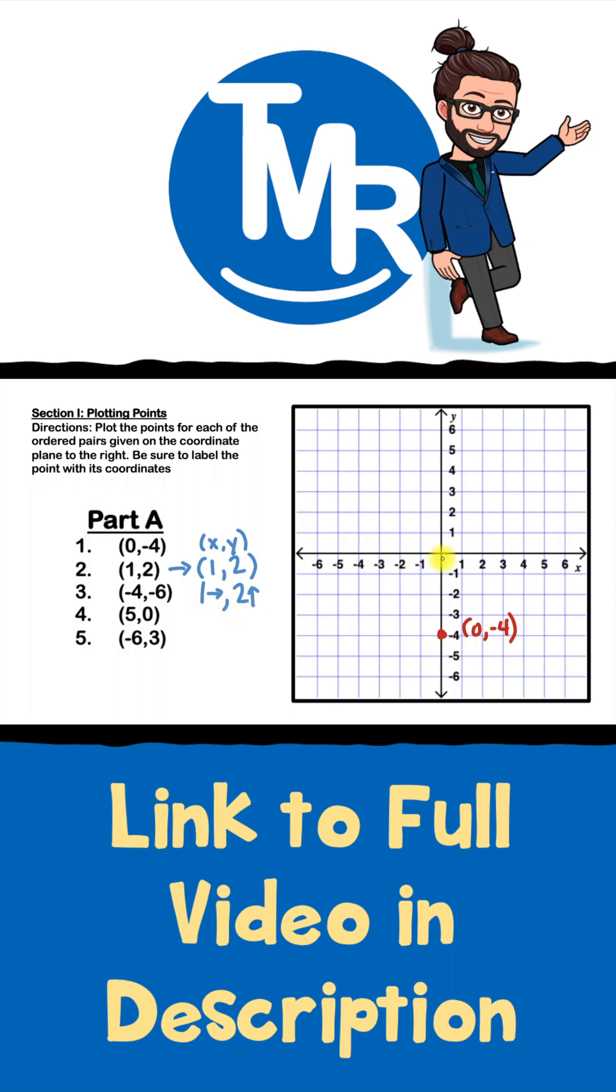So let's start at the origin like we always do, and then follow the plot plan. Let's move one space to the right. One. So now we're here. And then from there we'll go two places up. One, two. And we'll plot our point right there and label it one comma two.